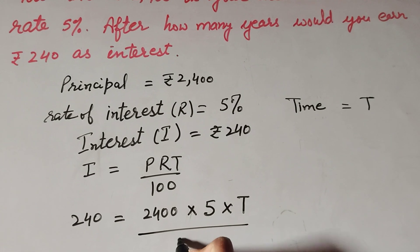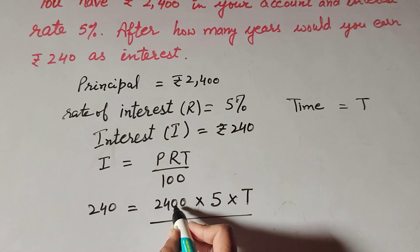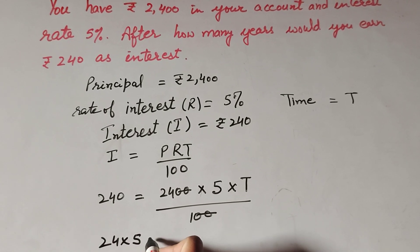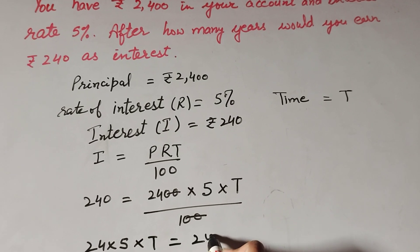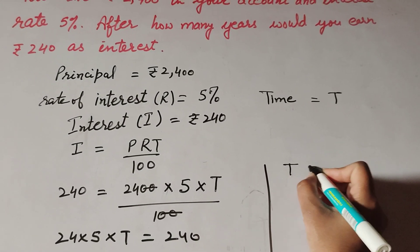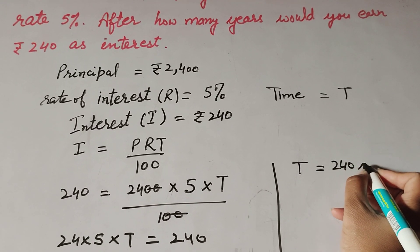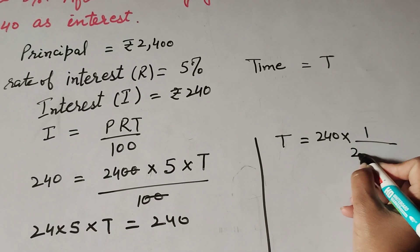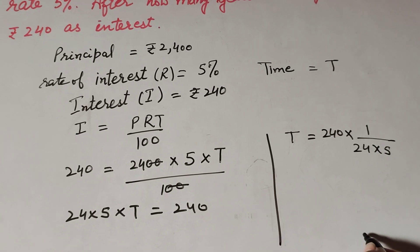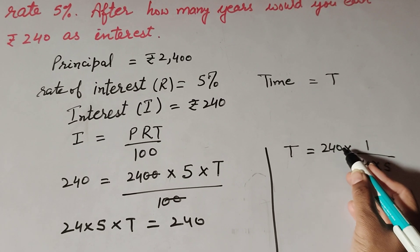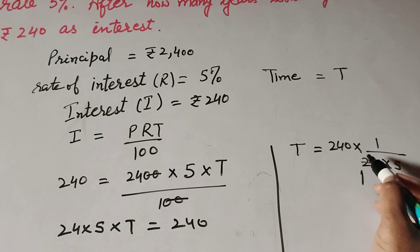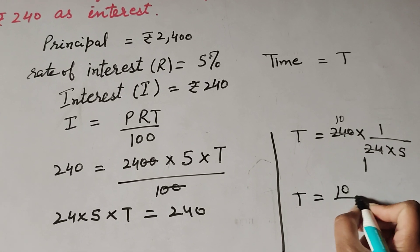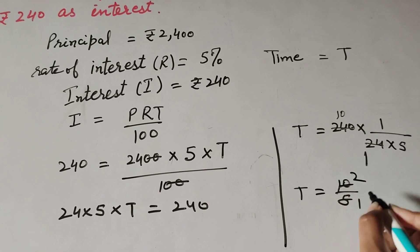That is over 100. Now 20 in the denominator and 20 in the numerator cancel, giving 24 multiplied by 5 multiplied by T equals 240. So T equals 240 over 24 multiplied by 5. Since 240 and 24 cancel, T equals 10 over 5, and so time T is equal to 2 years.